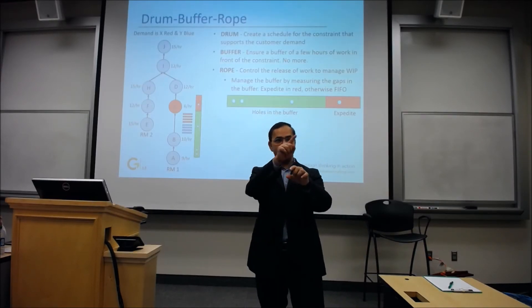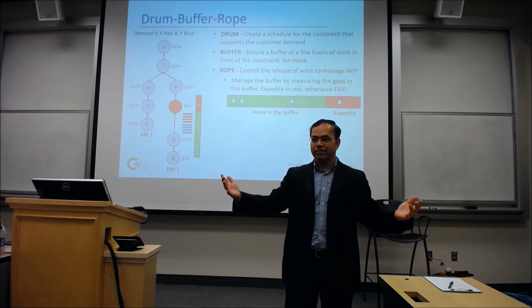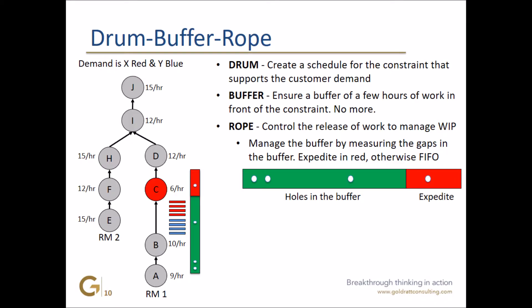When you look at it from a picture perspective, you draw boxes and they look the same. But in a production environment, the touch times of A and B are very small — you don't really have to bother about managing that time. All of the time between A and C can just be treated as buffer.